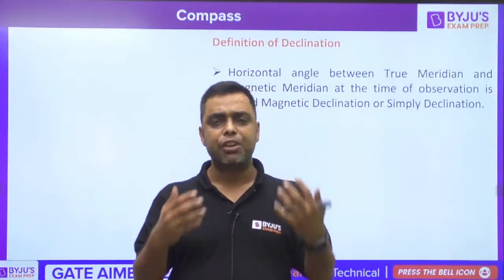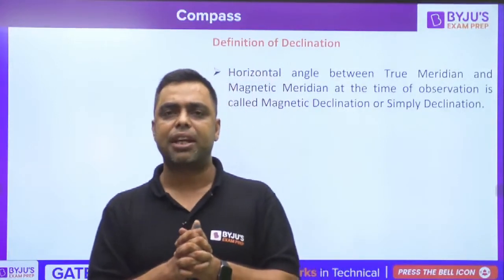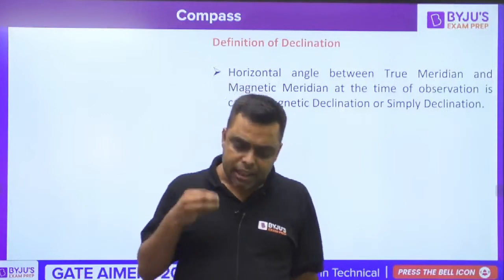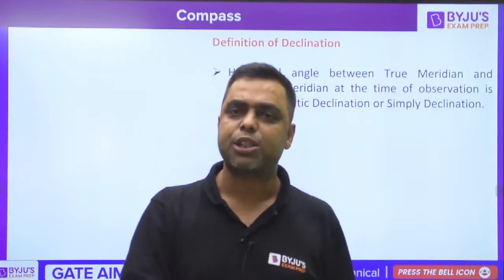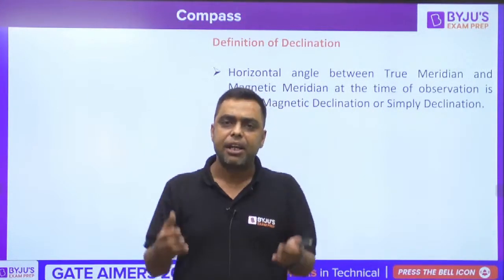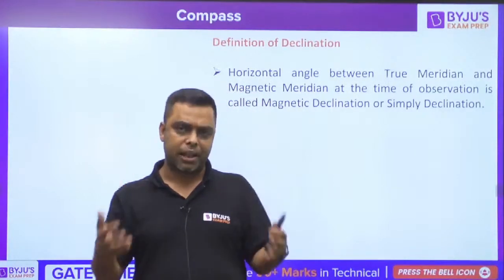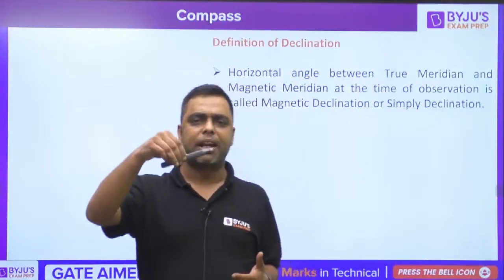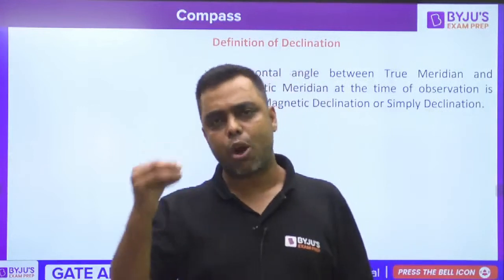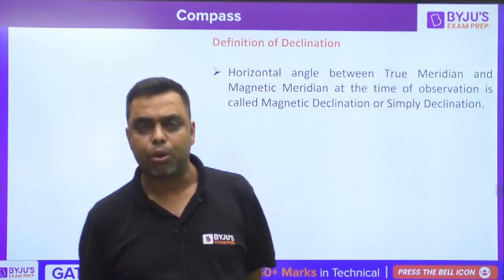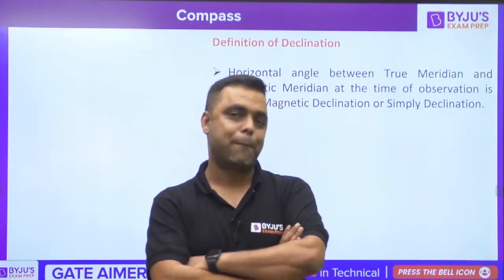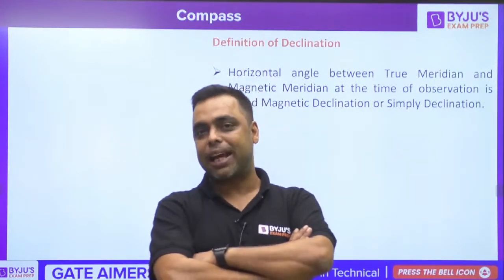The true meridian is one reference direction with respect to which we can measure angles between lines. We have another reference meridian called the magnetic meridian. The magnetic meridian is defined with the help of a magnetic needle or magnetic compass. If I freely suspend a magnetic bar about its center of gravity, it will align itself in a certain direction — the direction of magnetic north and magnetic south at that place.